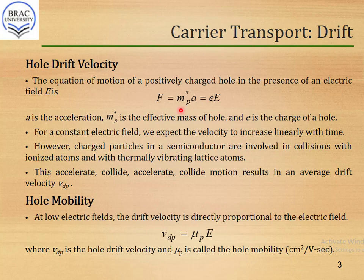Because this hole is in an electric field E, the applied force F will also equal the charge of that hole multiplied by the applied electric field E. For a constant electric field, we can expect that the velocity will increase linearly with time, since a fixed E gives a fixed F, and a fixed F gives a fixed acceleration. However, this is not the case in practice, because charged particles in the semiconductor will be involved in collisions with ionized atoms and thermally vibrating lattice atoms during movement. So a hole will experience a series of acceleration, collision, acceleration, collision, and through this process we achieve an average drift velocity Vdp.